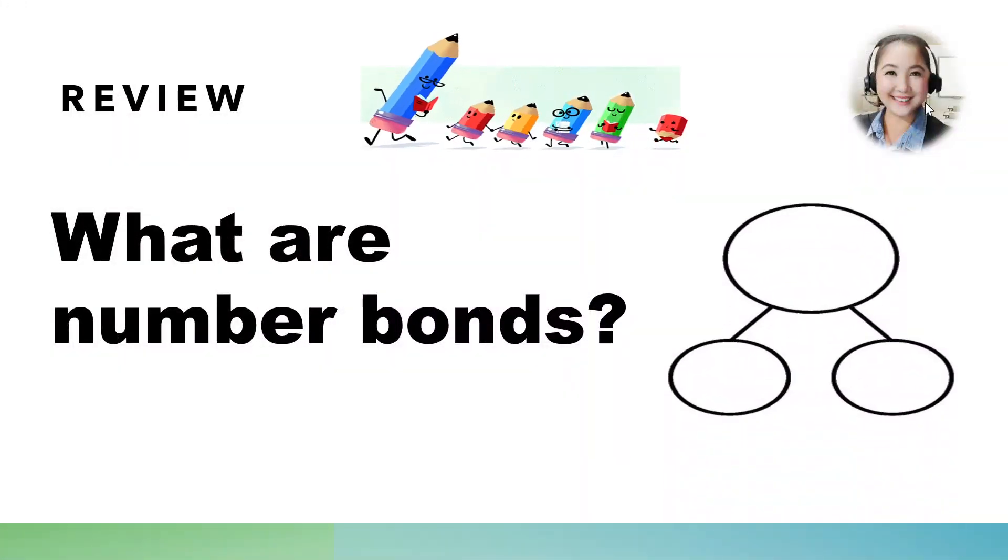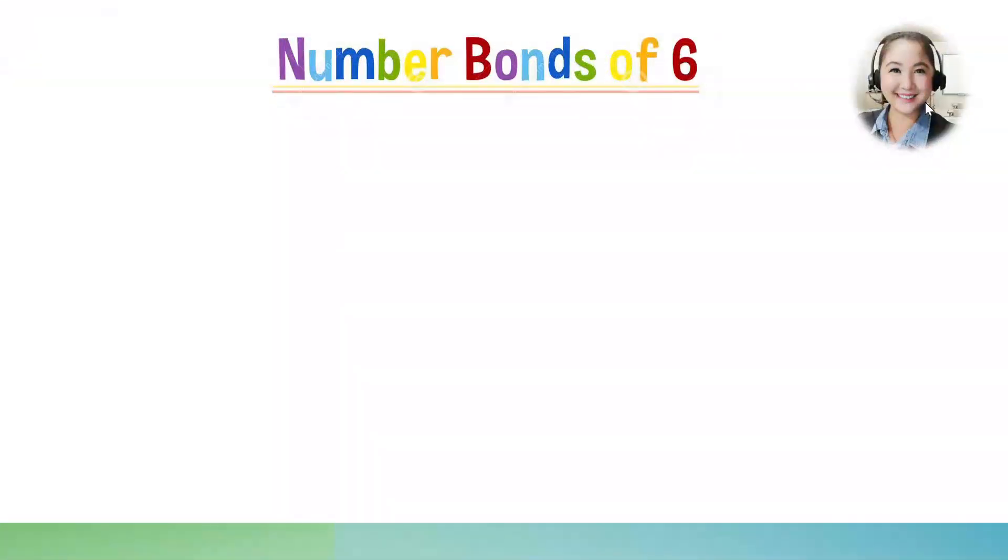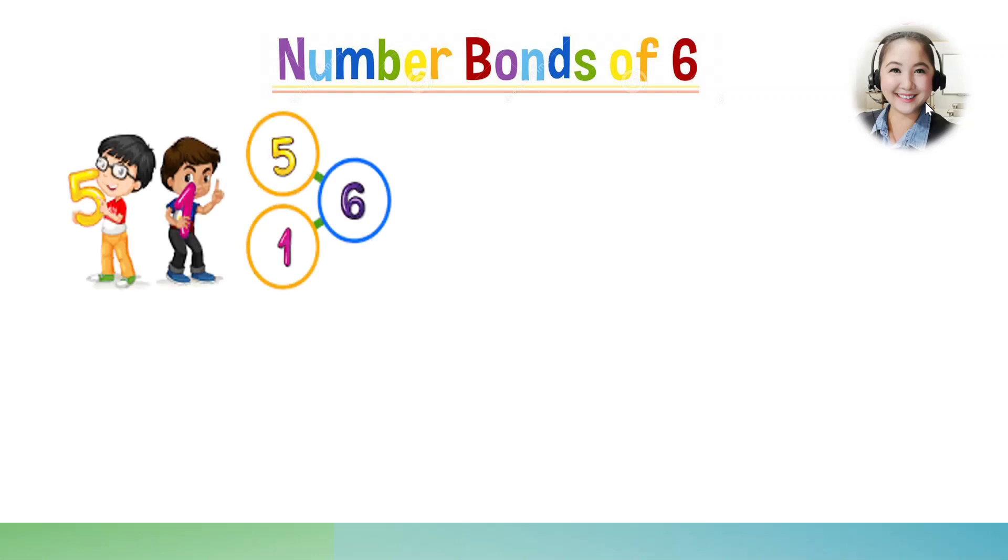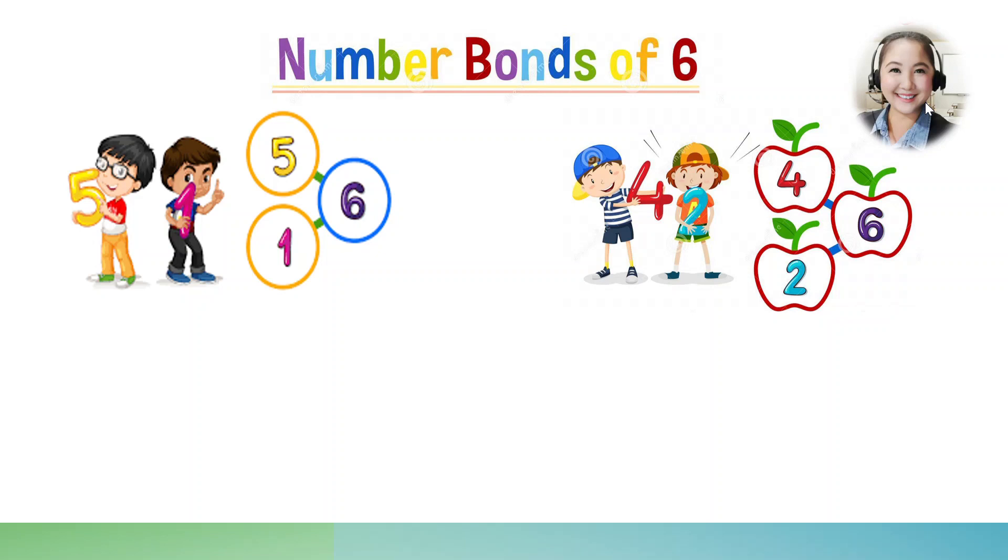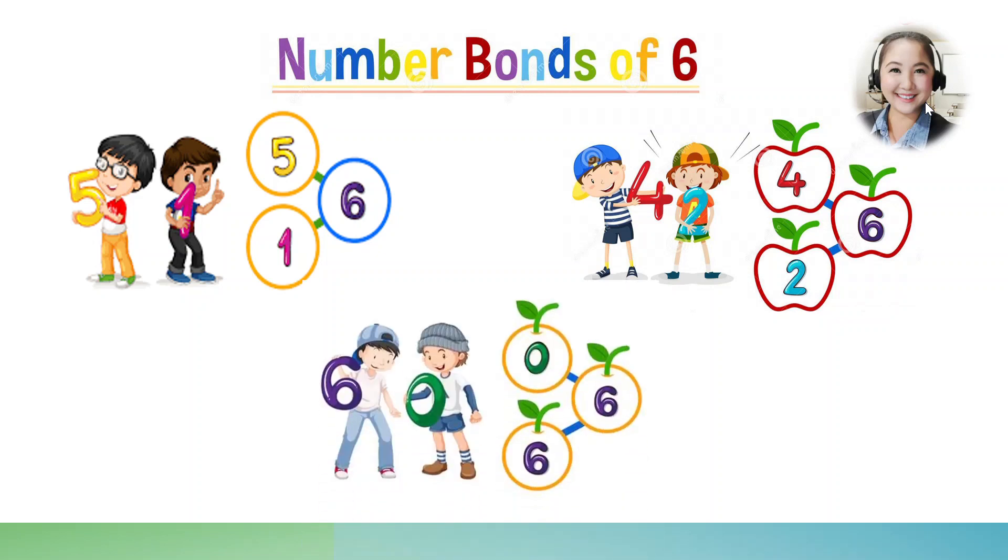Number Bonds is a model that represents the relationship between the total and the parts. Look at this. Number Bonds of 6. So, let's think of pairs of numbers that add up to 6. Okay, 5 and 1 make 6. Can you help me? Think of another pair of numbers. Great job! 4 and 2 make 6. Another. Yes, 0 and 6 make 6. So, if we add 5 and 1, let's say you have 5 fingers and 1 more finger, the total is 6. Very good!